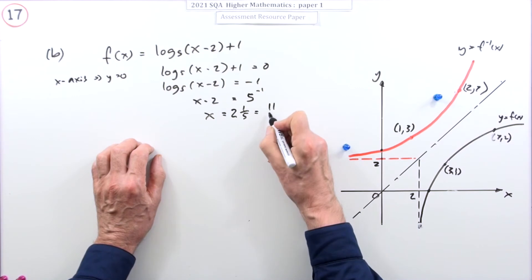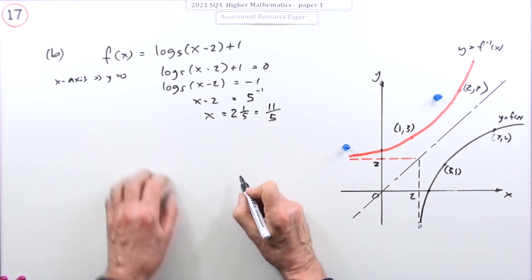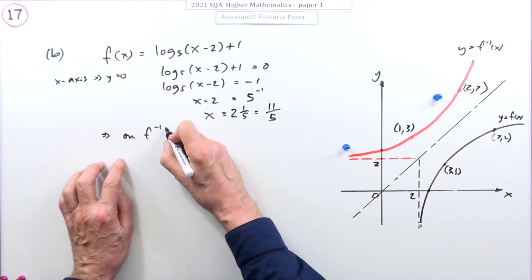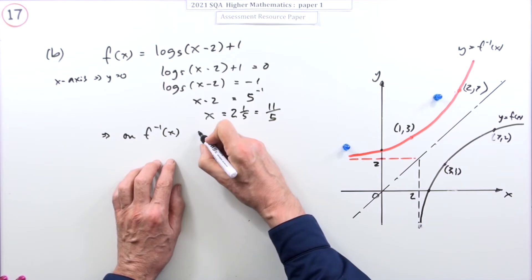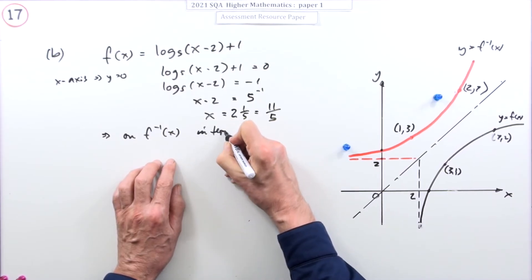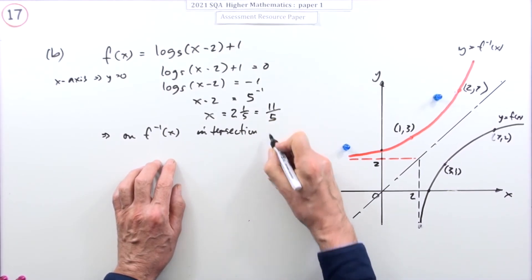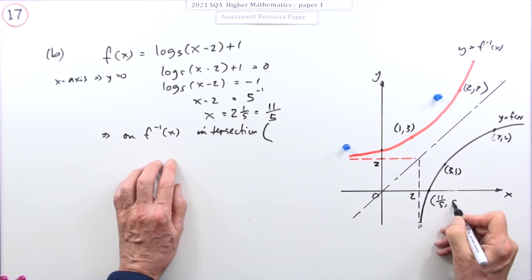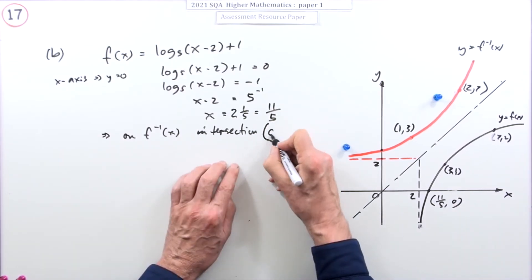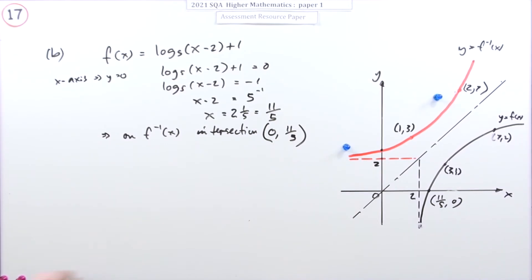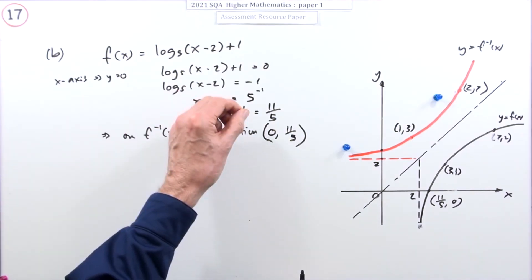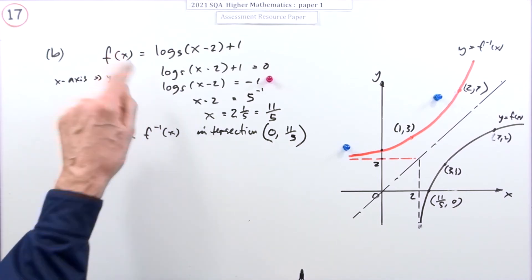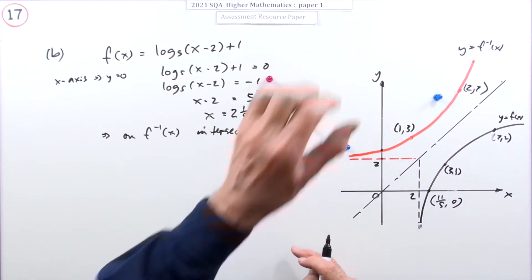So on the graph of the inverse function, the intersection will be the coordinates flipped: instead of (11/5, 0) it will be (0, 11/5). There's one mark for setting up the equation and then getting the answer and flipping the coordinates.